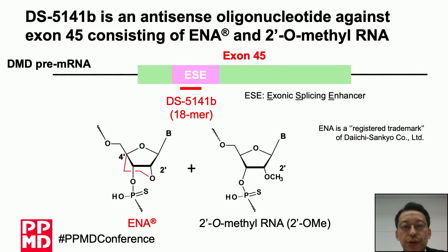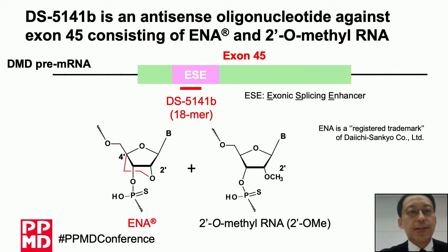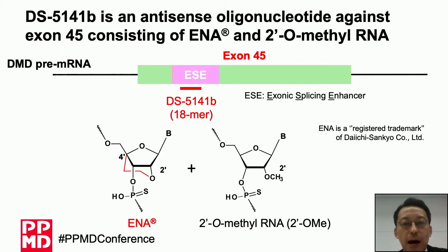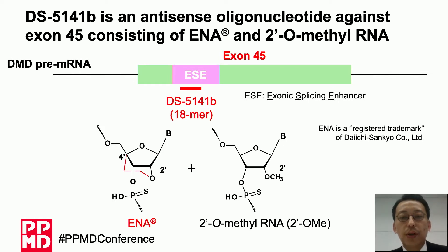DS5141B, our selected compound for exon 45 skipping, was designed to cover the splicing enhancer sequence of exon 45. DS5141B is a chimera antisense oligonucleotide consisting of 2'-O,O'-C ethylene-bridged nucleic acid — we call it ENA — and 2'-O-methyl RNA. ENA has a stronger binding affinity to RNA and high stability against nucleases compared to PMO and 2'-O-methyl.